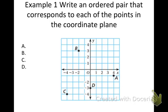You're going to copy this down into your notebook. This is example 1. We're going to write an ordered pair that corresponds to each of the points in the coordinate plane. Starting with A: to get to A, I came over a positive 4 and down a negative 1. So A is at positive 4 and negative 1.